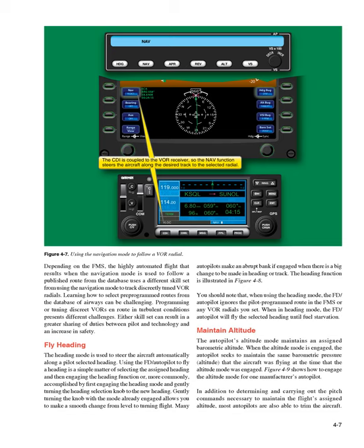The heading function is illustrated in Figure 4-8. When using the heading mode, the FD/autopilot ignores the pilot-programmed route in the FMS or any VOR radials you set. When in heading mode, the FD/autopilot will fly the selected heading until fuel starvation.